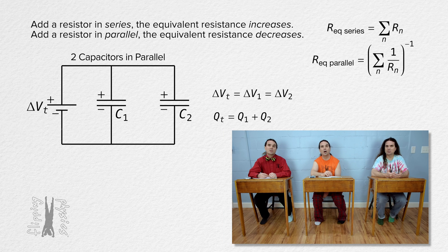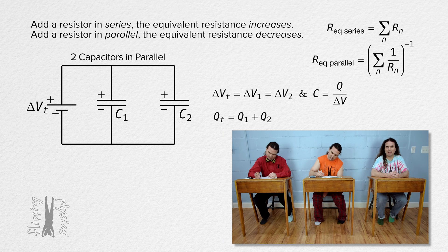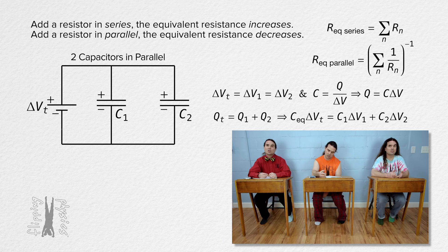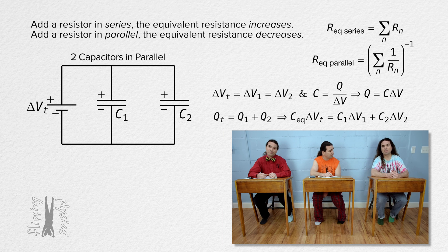Now we can use the definition of capacitance: capacitance equals the magnitude of the charge stored on one of the plates of the capacitor over the electric potential difference across the plates of the capacitor. That means charge equals capacitance times electric potential difference, which we can substitute into the charge equation to get equivalent capacitance times terminal voltage equals the sum of the capacitance of each capacitor times the electric potential difference across each capacitor.